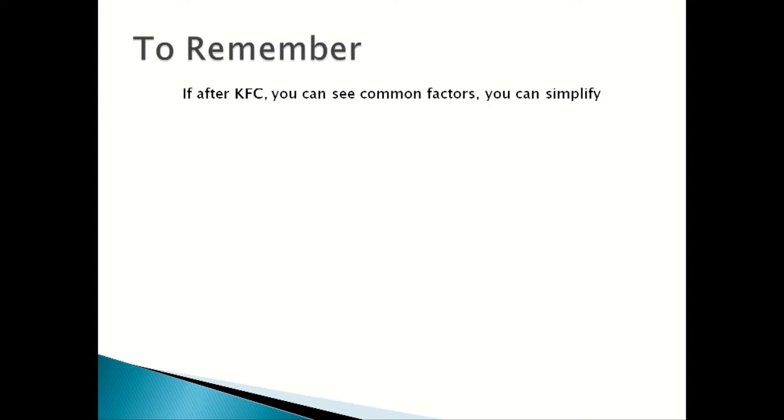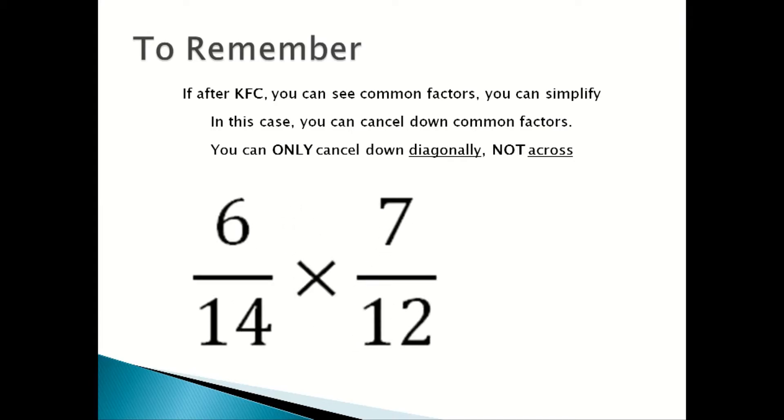To remember: if after KFC you can see common factors, you can simplify down. You can only cancel down diagonally and not across with fractions. In this case, you can cancel down common factors because you can cancel down 6 and 12 (6 goes into 12 two times), and you can also cancel down 7 and 14 (7 goes into 14 two times).